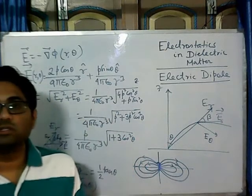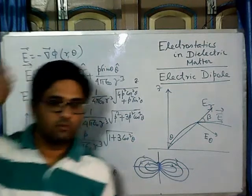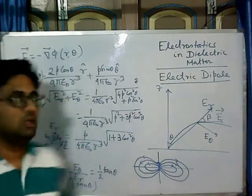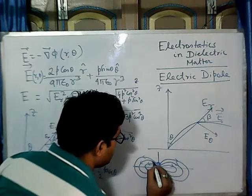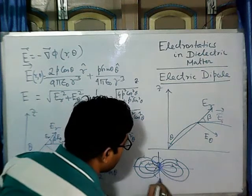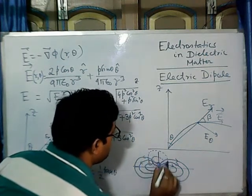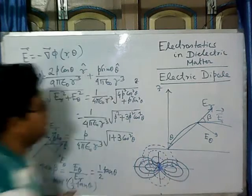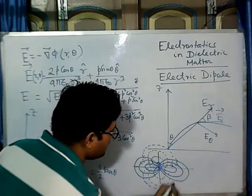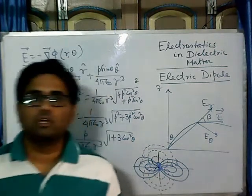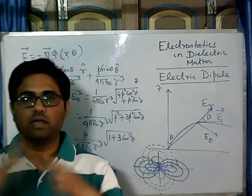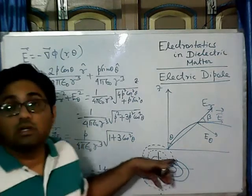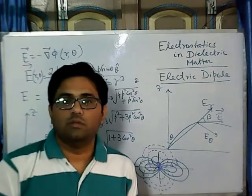The electric field lines will be like this and the dipole moment direction is along this. There will be different potential values at different points from the dipole. If we connect all the loci of those points with the same potential, they form equipotential surfaces — drawn here in dotted form. The electric field penetrates the equipotential surface in a perpendicular manner, so at all points the direction of the electric field is perpendicular to the equipotential surface.